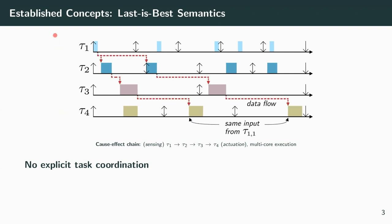The chain's data age experiences many jitters as the data of the first job tau one could be used by all depicted jobs of tau four. Additionally, the worst case analysis is even worse than depicted here. Consider a case where the second job of tau three overtakes the third job of tau four—then the chain output could be as late as the end of the fourth period of tau four.